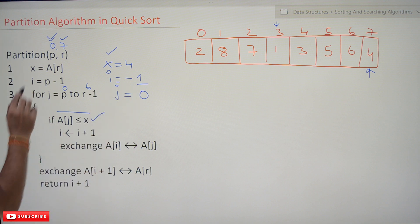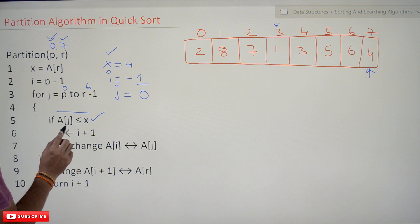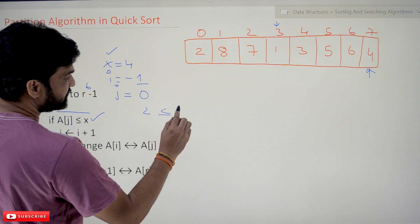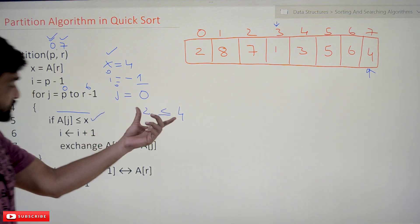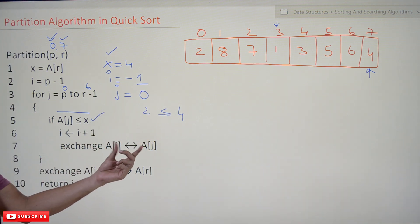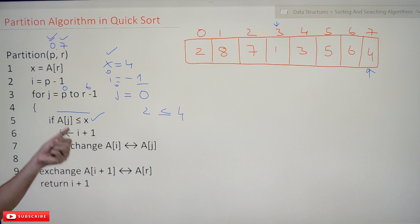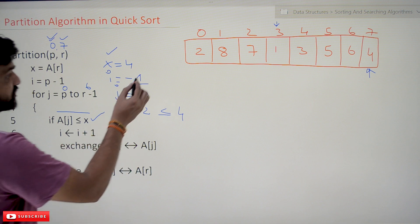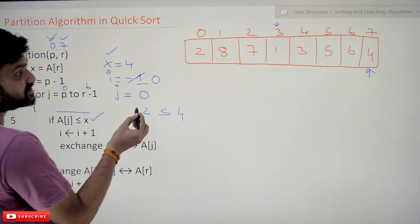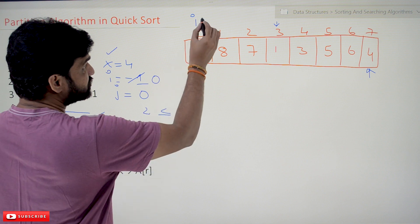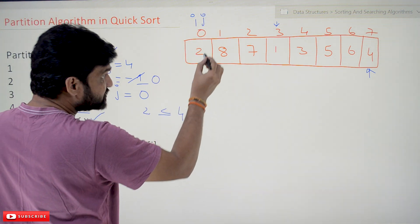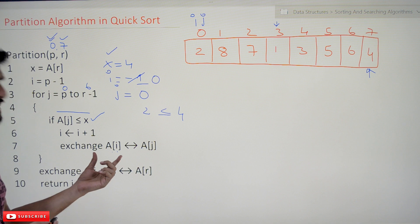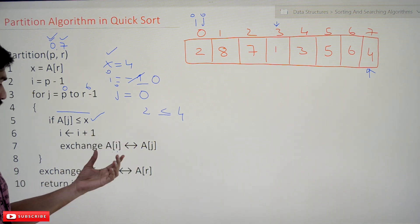This loop will iterate 7 times. At j=0, a[j] means a[0] which is 2. Is 2 less than or equal to x (which is 4, the pivot element)? Yes, it is true. If it is true, we increment i: i becomes 0. Now we exchange a[i] with a[j] — both i and j are at index 0, so the element is exchanged with itself and remains in its position.